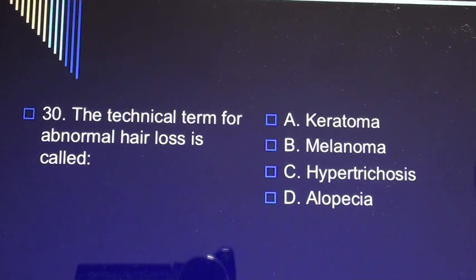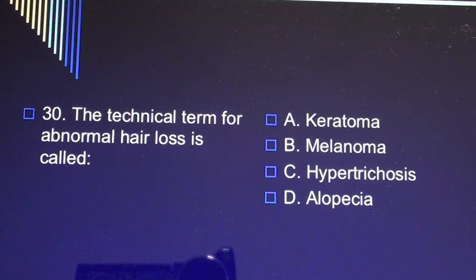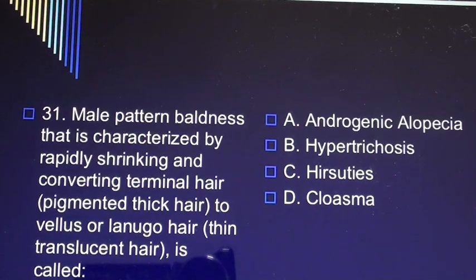Question 30: The technical term for abnormal hair loss is called A) keratoma, B) melanoma, C) hypertrichosis, D) alopecia. Question 31: Male pattern baldness that is characterized by rapidly shrinking and converting terminal hair (pigmented thick hair) to vellus or lanugo hair (thin translucent hair) is called A) androgenic alopecia, B) hypertrichosis, C) hirsutism, D) chloasma.